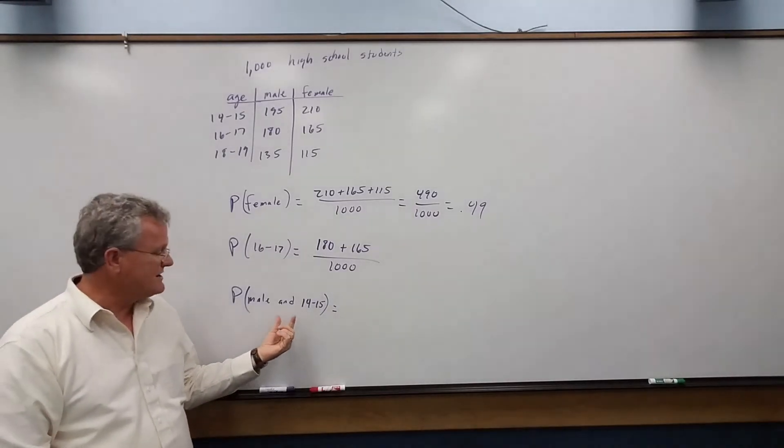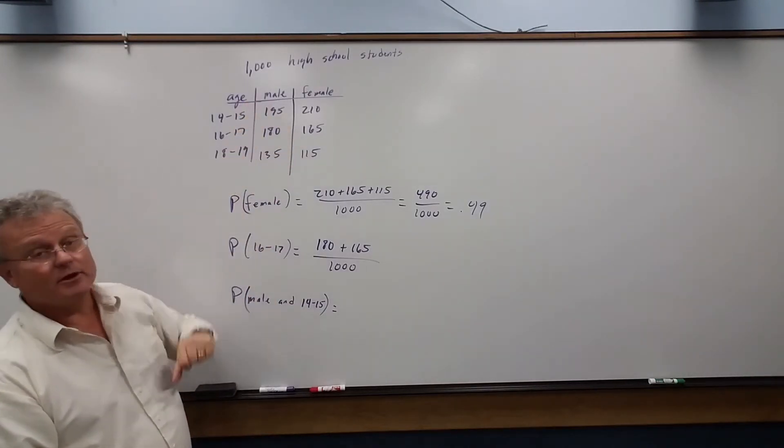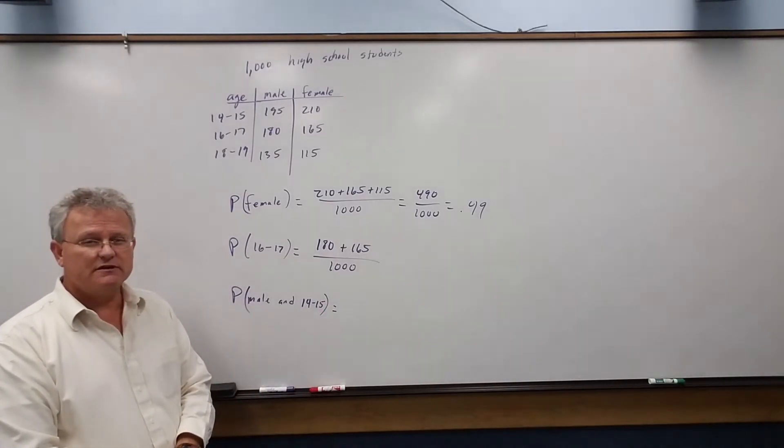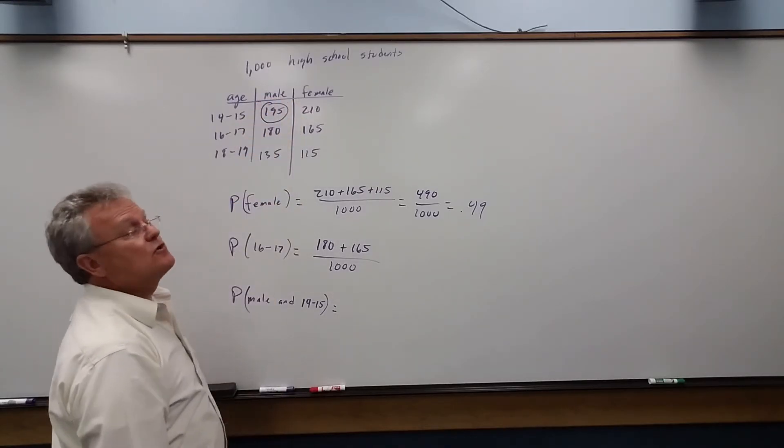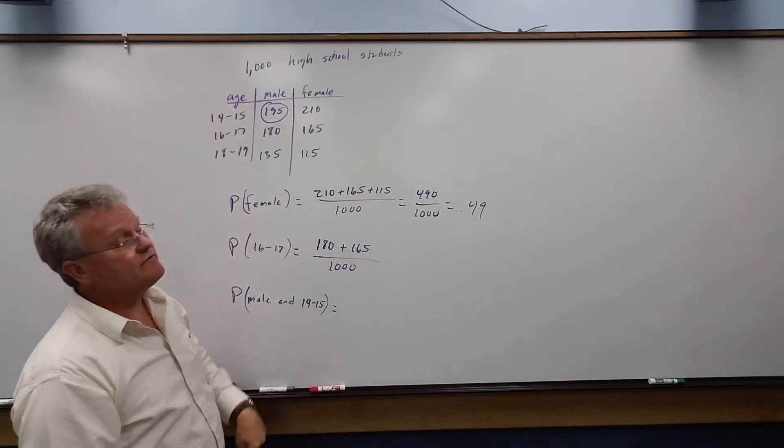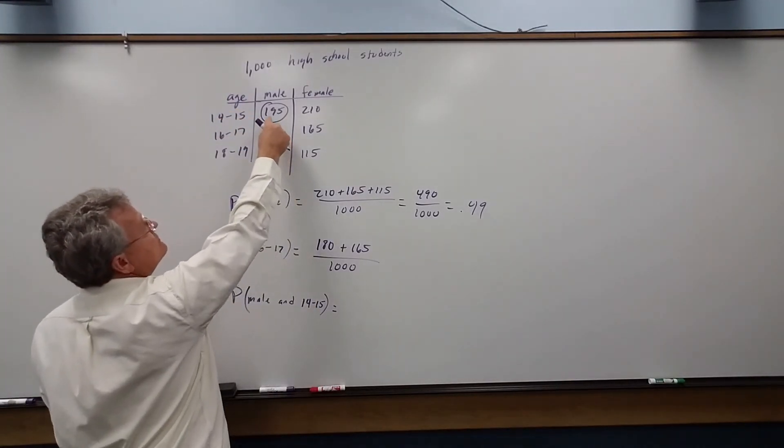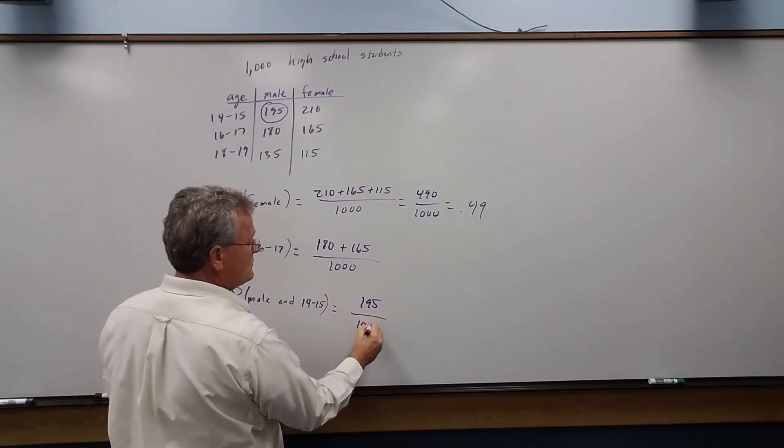Now this one, this is a good one—the 'and.' What's the probability to pick someone who is male and 14 to 15? Well, this is the entry that corresponds to all the people that are male and 14 to 15. So the answer is 195 out of our total, which is 1,000.